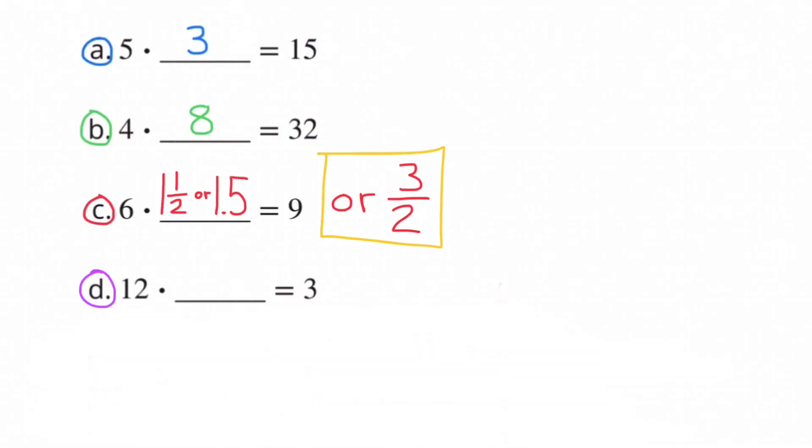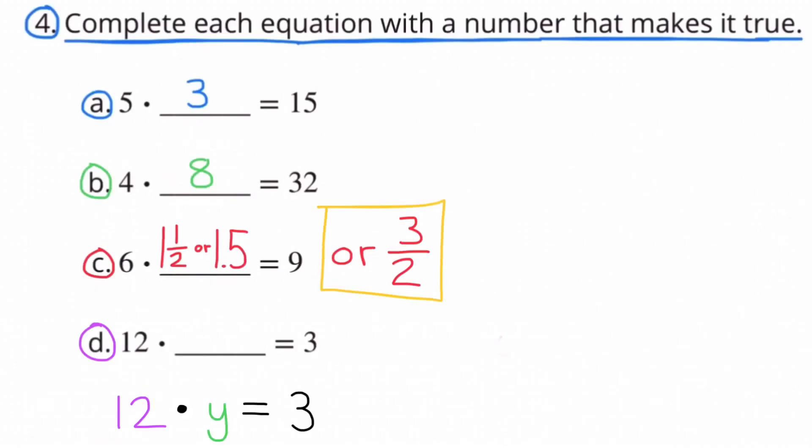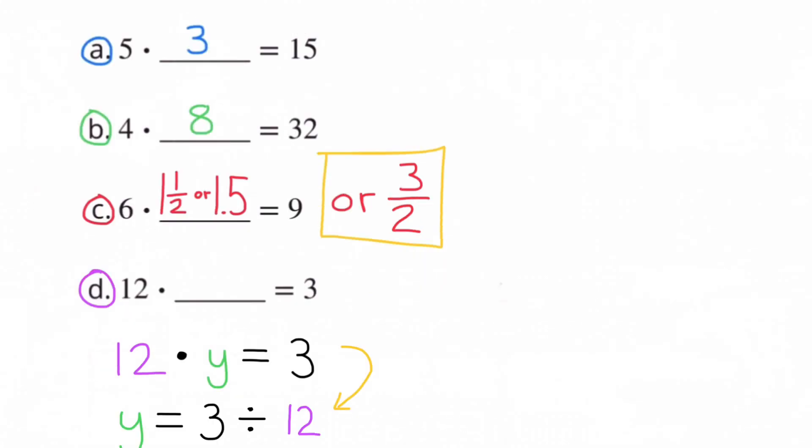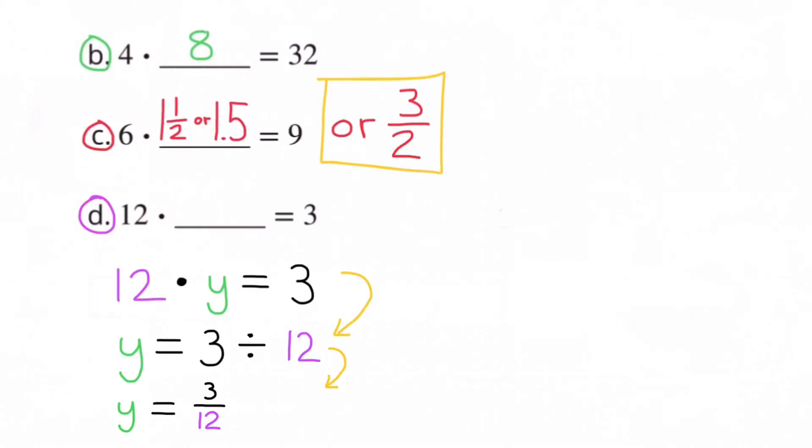D: 12 times what number equals 3? That's the same as the equation 12 times y equals 3, y being the unknown number. We can solve for y by getting the y by itself. Y equals 3 divided by 12, and 3 divided by 12 is the same as 3/12.